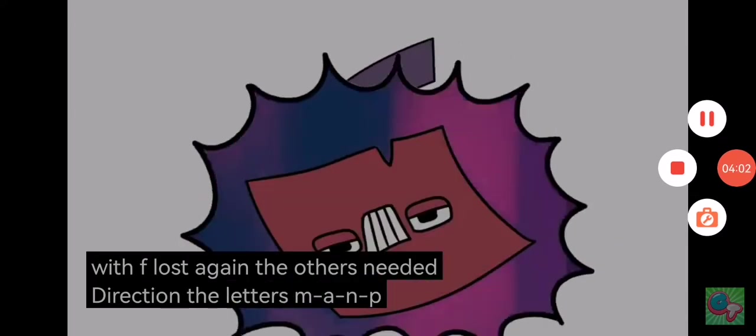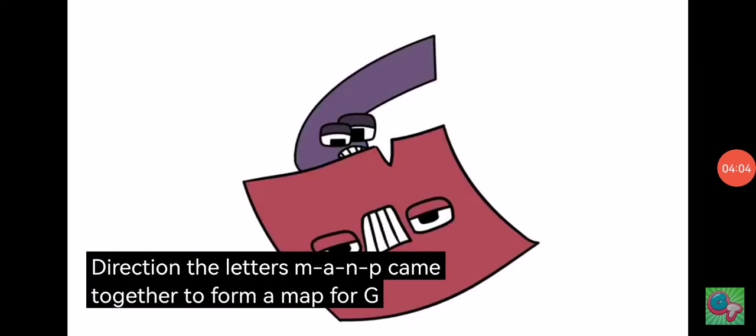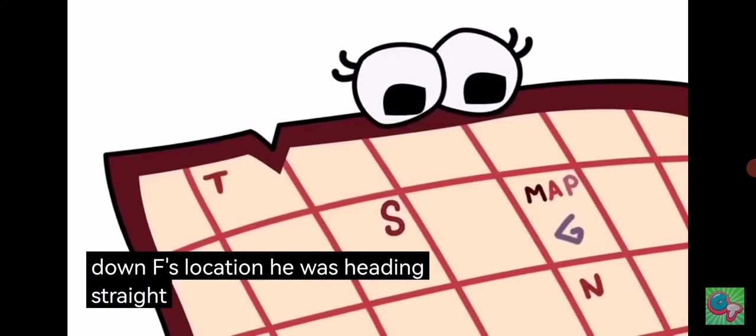The letters M, A, M, P came together to form a map for G to track down S's location. He was heading straight for S.